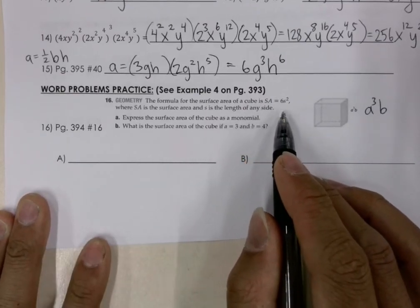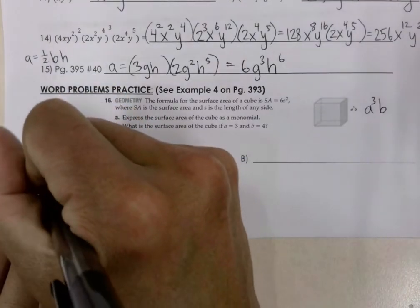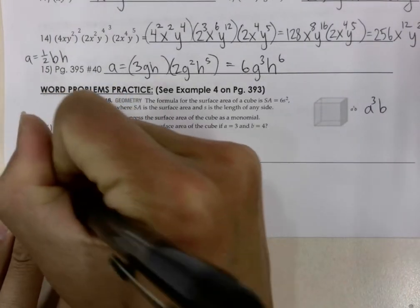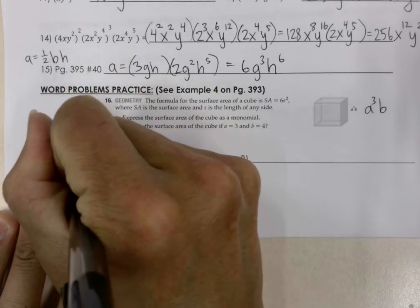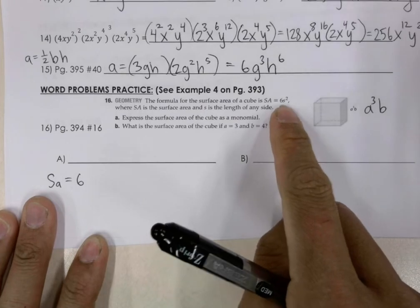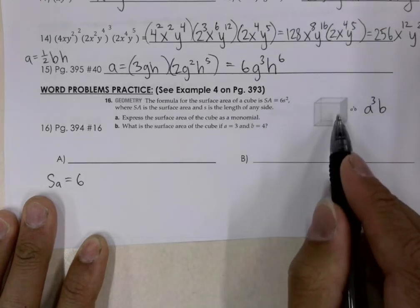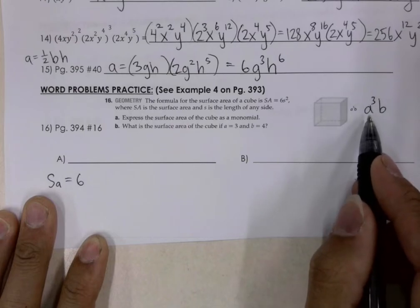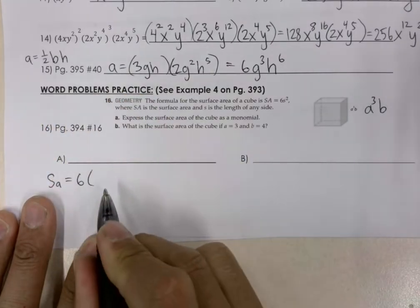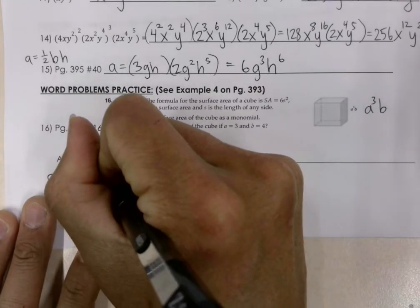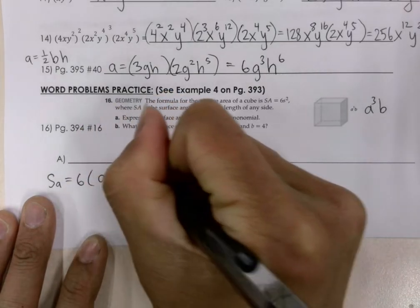And so how do we do it? Well, we can plug in. Surface area is equal to 6S squared. And what is the length of the side? It is A to the 3 power, to the power of 3 times b. So that's what I'm going to put here in the place of S. I'm going to substitute A to the power of 3 times b in parentheses, and that is squared.